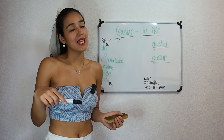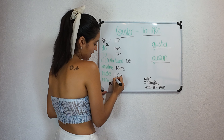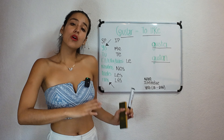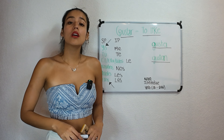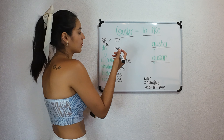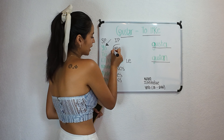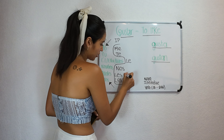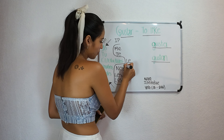So which ones are those? Well, we have me, te, le, nos, les, and les. Those are the pronouns that we are going to use with this verb and other verbs that I'm going to tell you at the end. For now, just remember these ones — the other ones are not important right now, so don't worry about them, just focus on these.